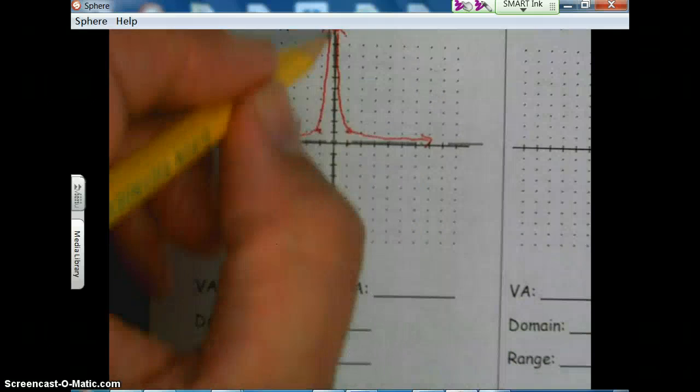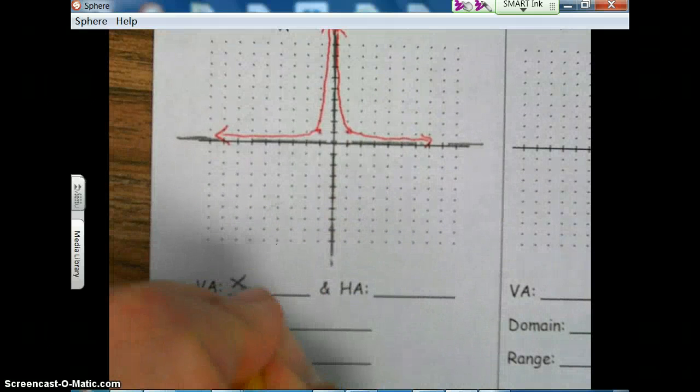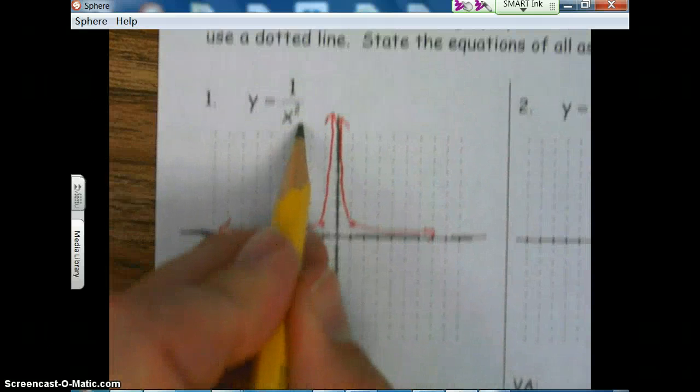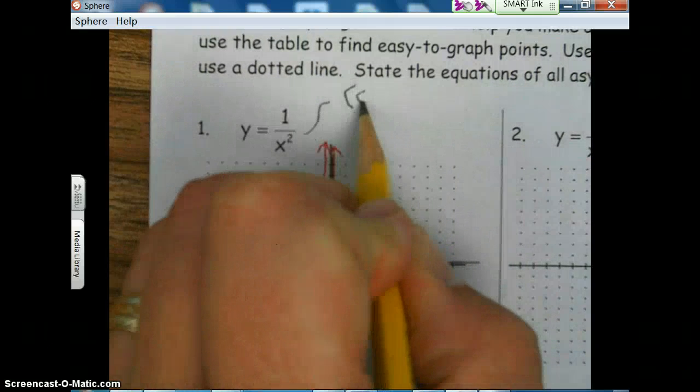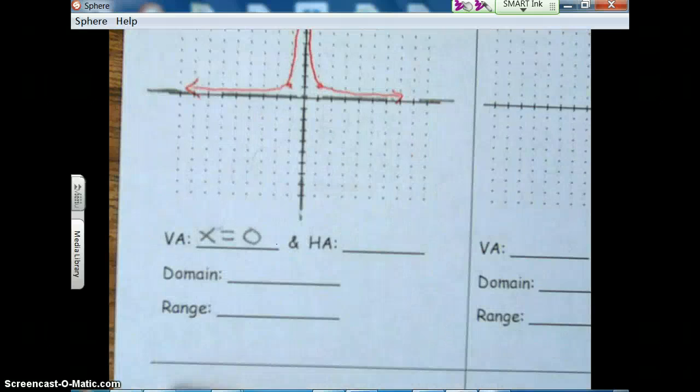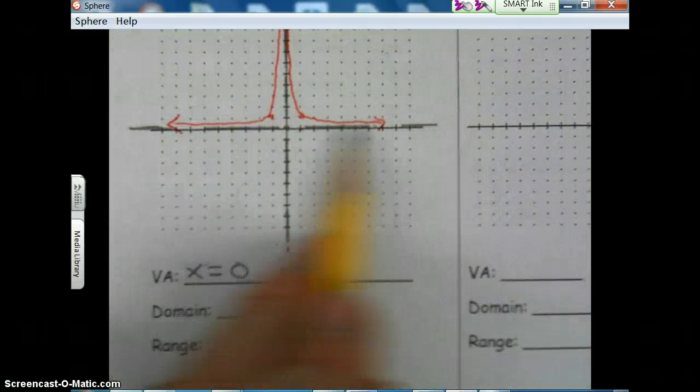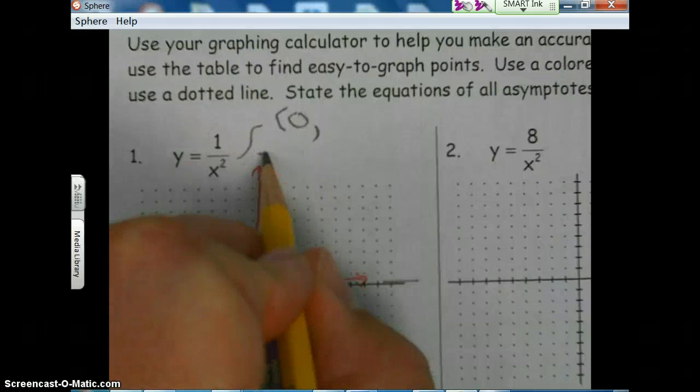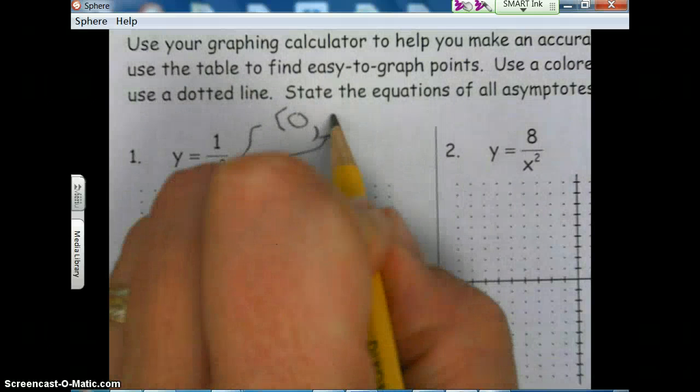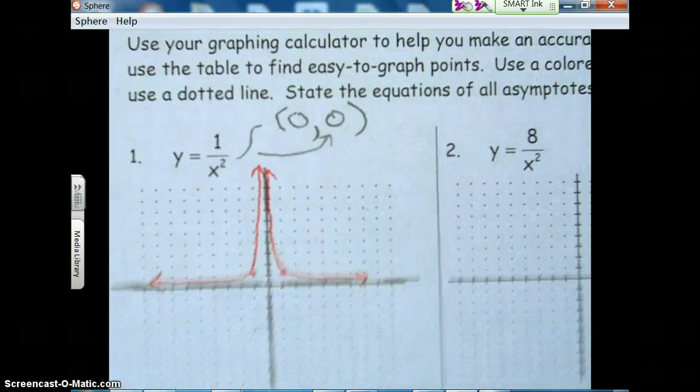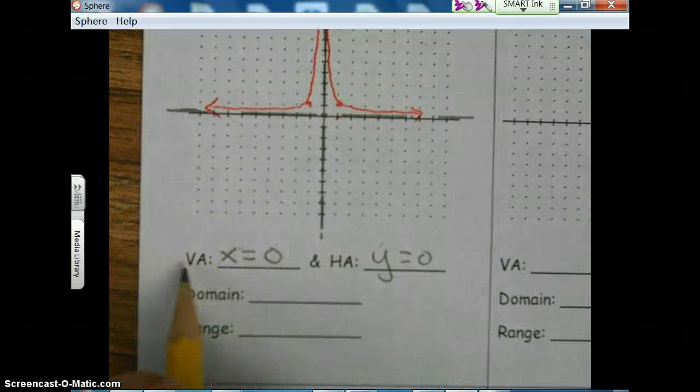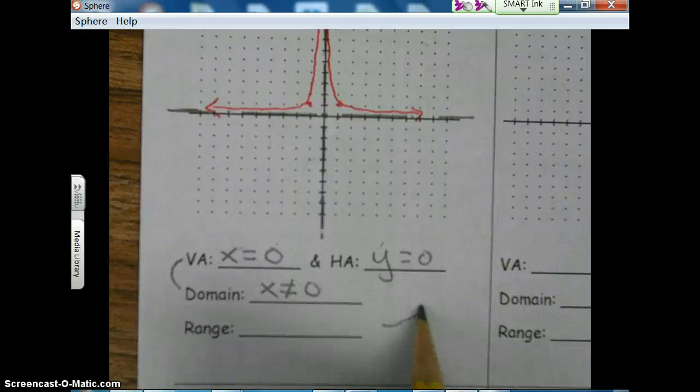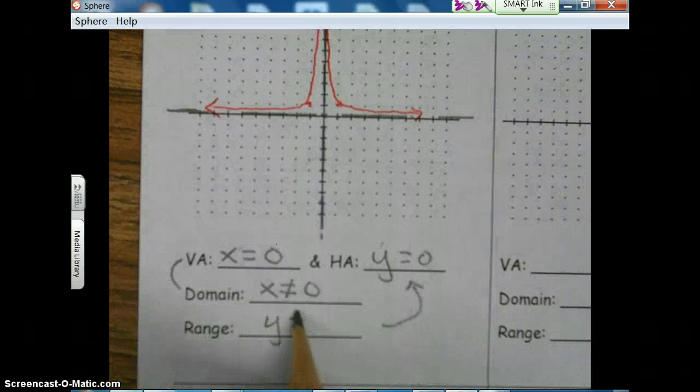Vertical asymptote, x equals zero. And that's going to correspond to your h value, which is zero. And then your horizontal asymptote, y equals zero. That's going to correspond to your k value, which in this case is also zero. And obviously, domain goes with vertical, x cannot be zero. And range goes with your horizontal, y cannot be zero.